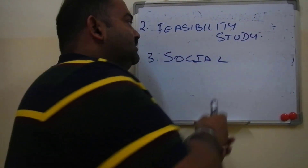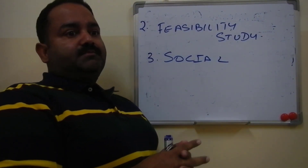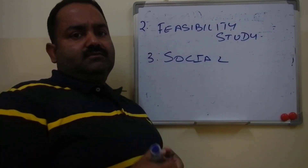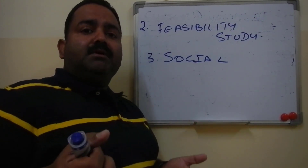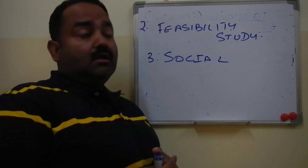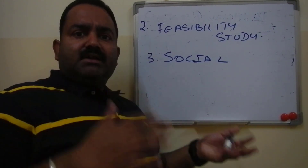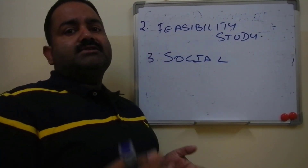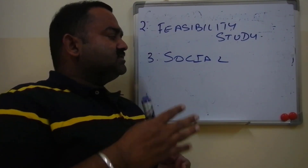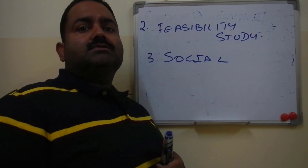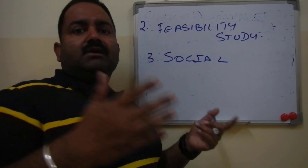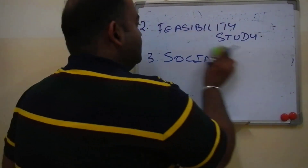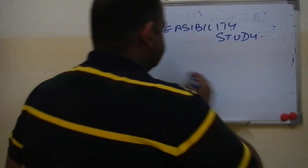The third feasibility — which is often ignored — is Social Feasibility. This is related to the society in which we live. Is your new system acceptable to the society or not? Many systems with good potential fail because they lack social feasibility. We study the social factors to determine whether society will accept the system.